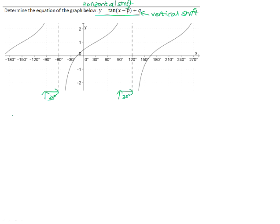So we have shifted this graph 30 degrees to the right. That means that our p value is 30 degrees because we've shifted it to the right. The sign in the bracket needs to be negative.